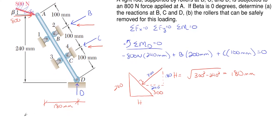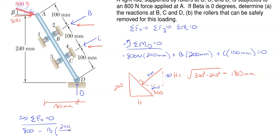Summing forces in the X direction — avoiding the D reaction and only using B and C components — I have 800 newtons going right (positive), minus the B reaction whose X component goes to the left, so B times 240/300, minus C times 240/300, equal to zero.